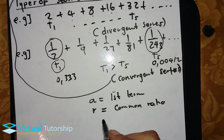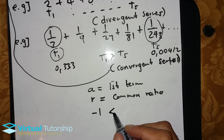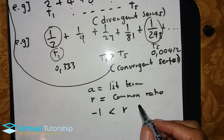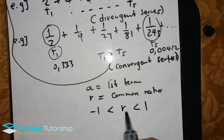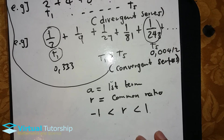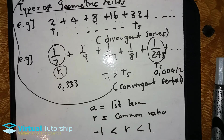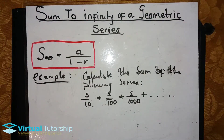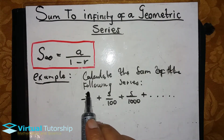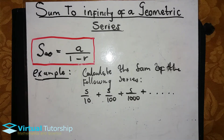The common ratio must lie between minus 1 and 1. So in an example, to calculate the sum of the following series, first look at the geometric series and divide to find the common ratio.